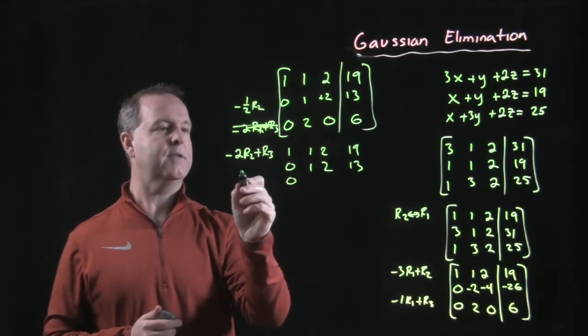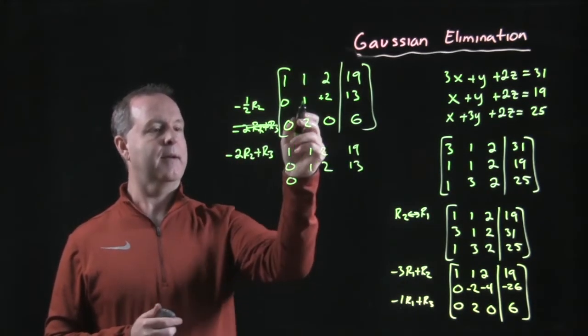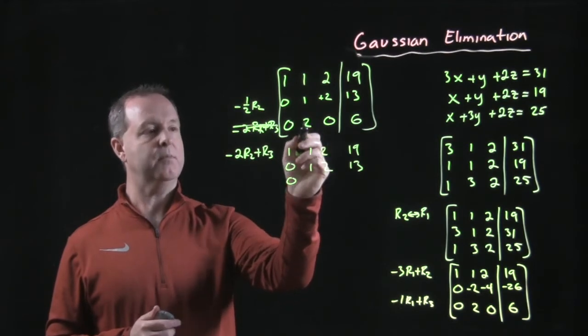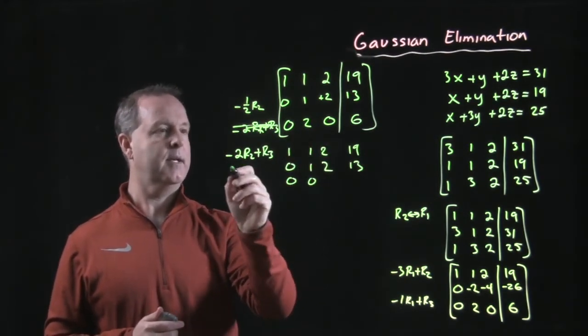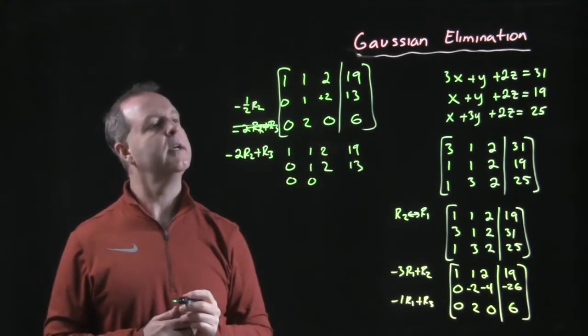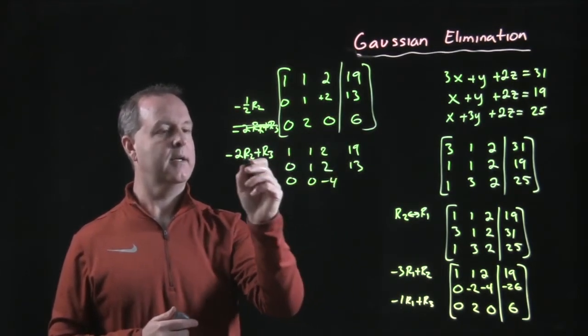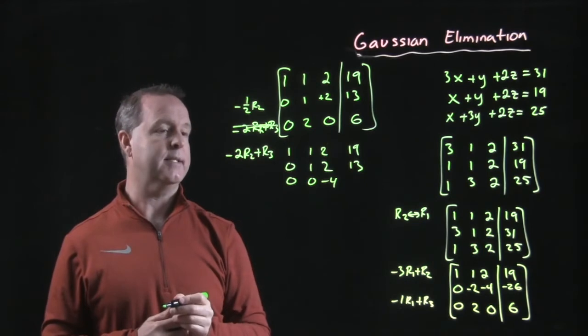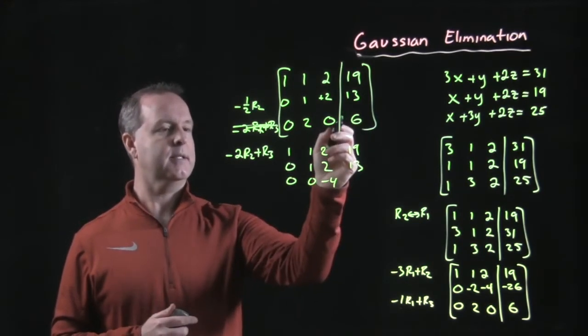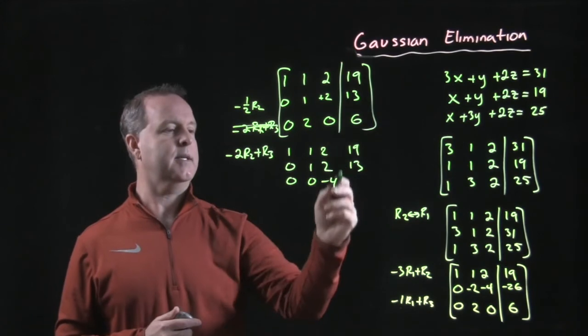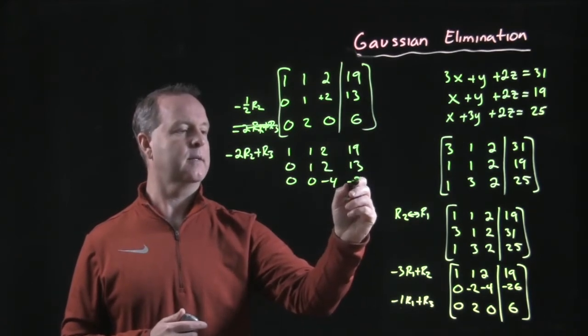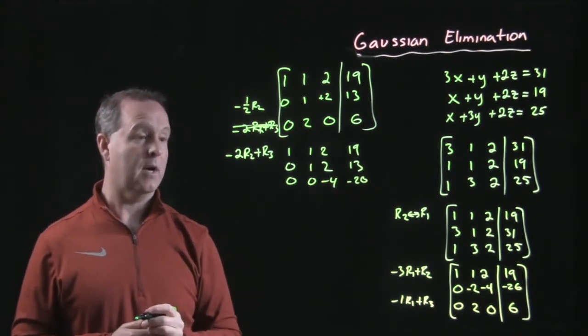That's a zero. Negative two times row two, which is negative two. Negative two plus two is zero. Negative two times two is negative four. Negative four plus zero is negative four. Negative two times 13 is negative 26. Negative 26 plus six gives me negative 20. All right.